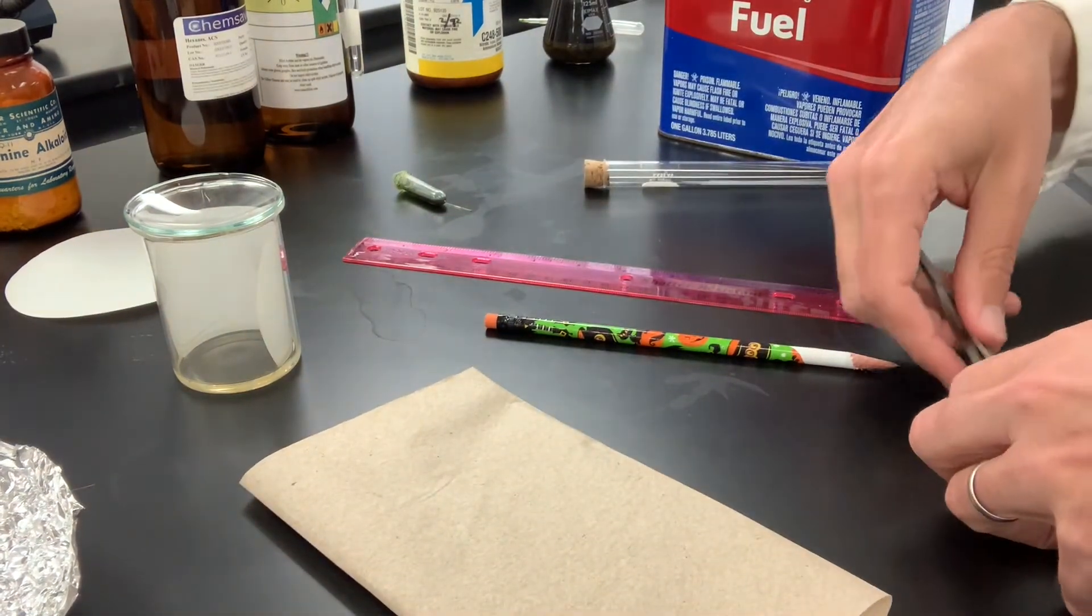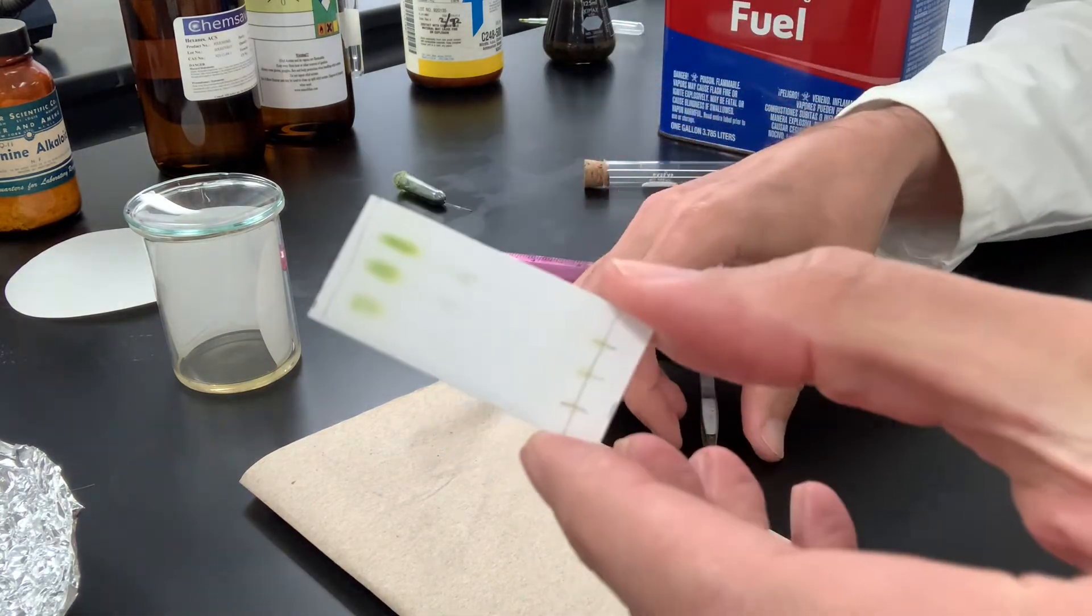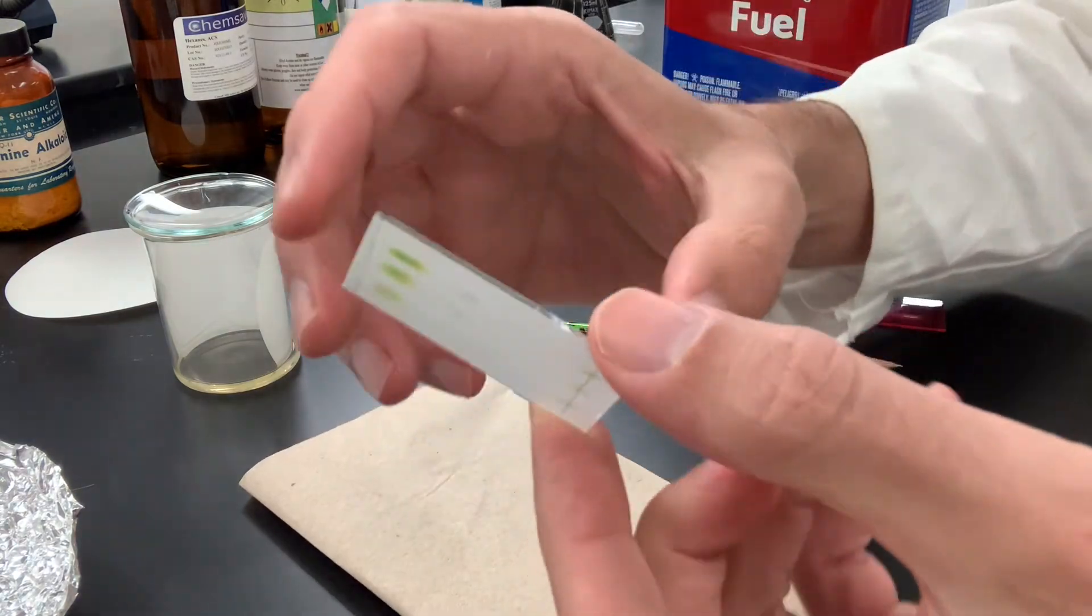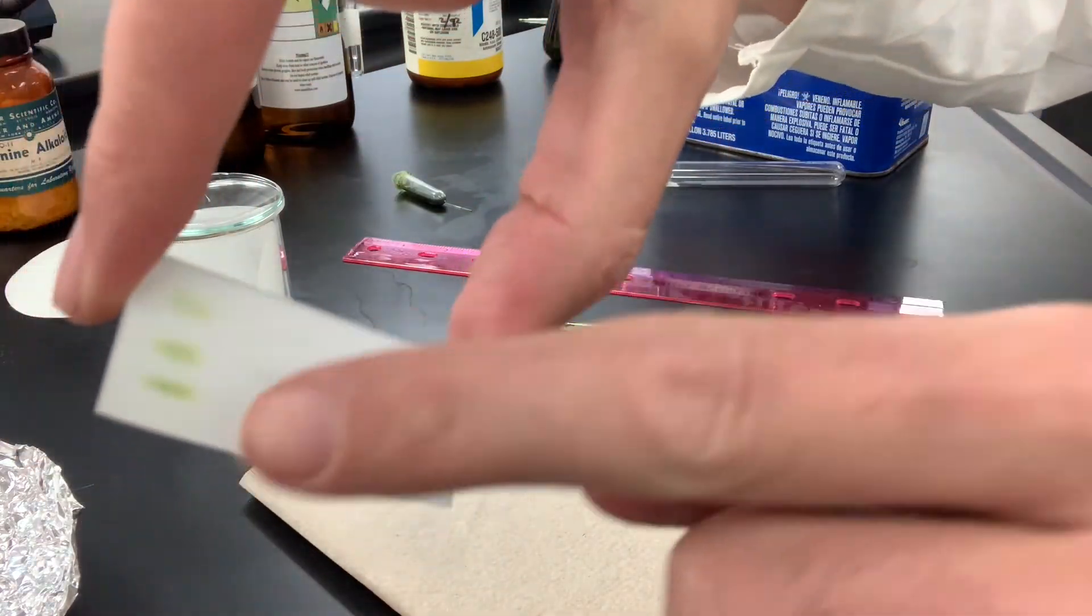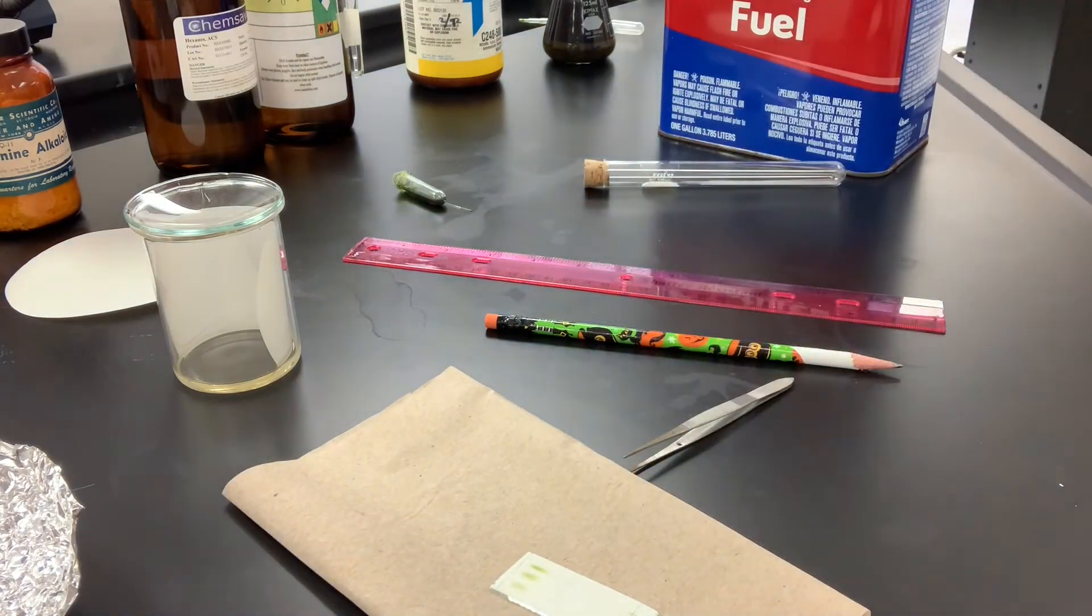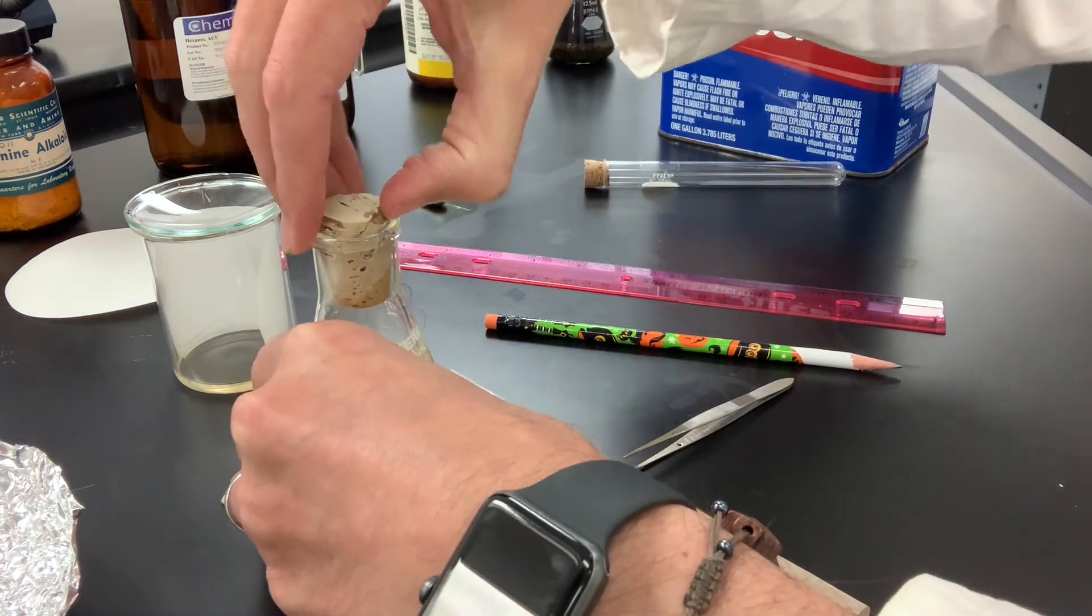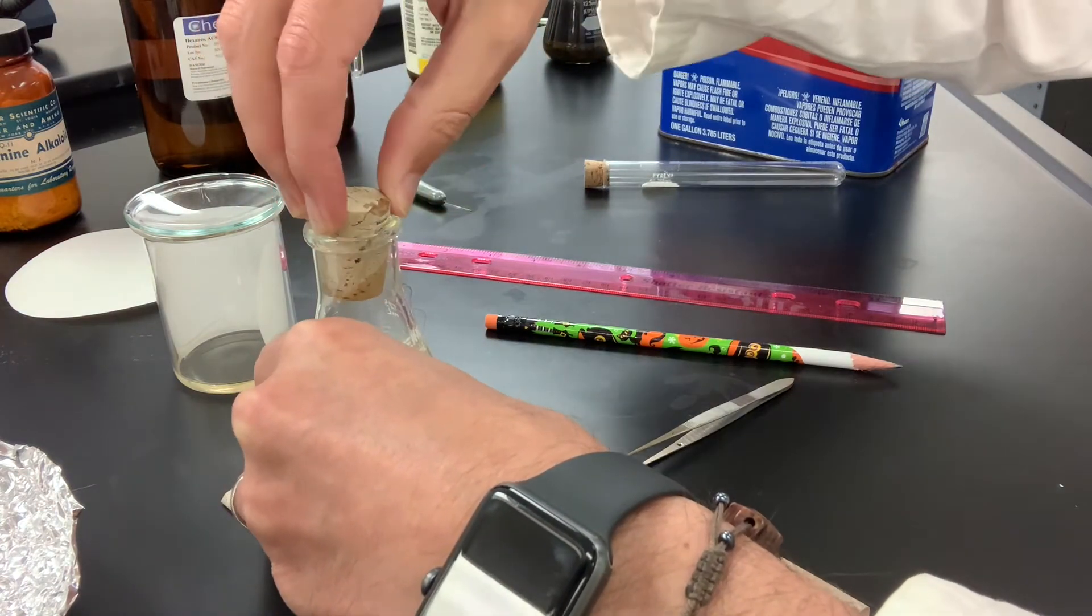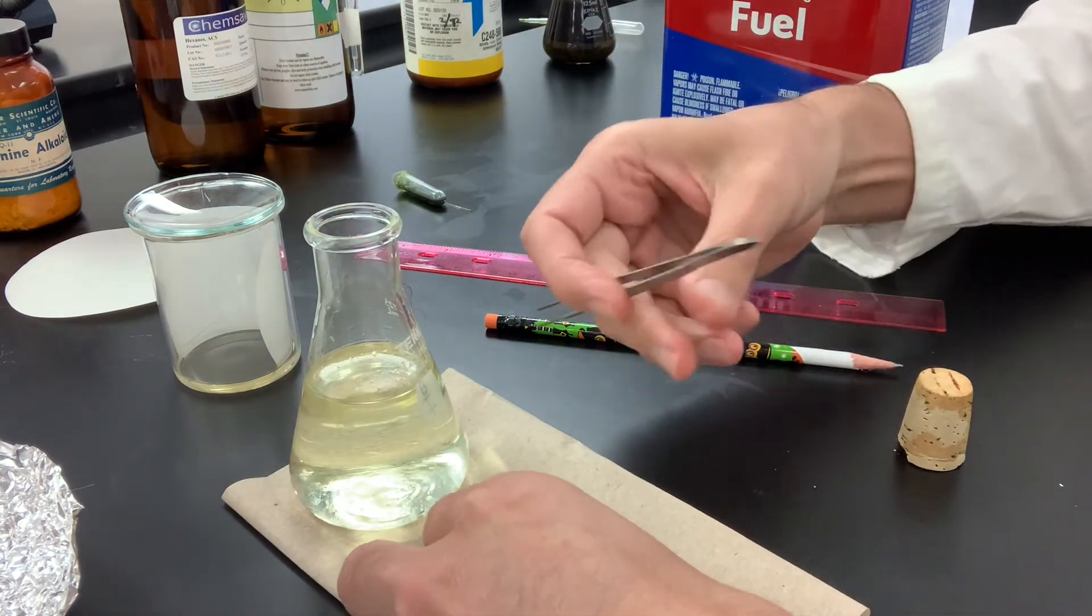The interesting thing about these TLC plates that have this glass backing to them is that you can observe on the top where the silica gel is, or you can observe through the glass, through the back. So I've got my 1% cerium ammonium and 50% phosphoric acid, and I'm going to dip this in here and we'll see what stains develop.